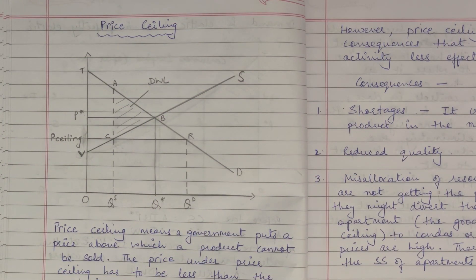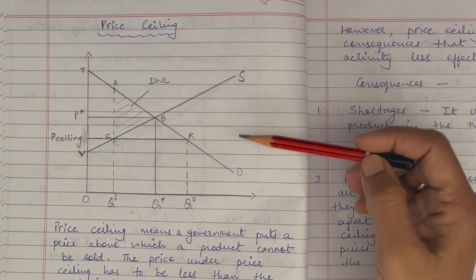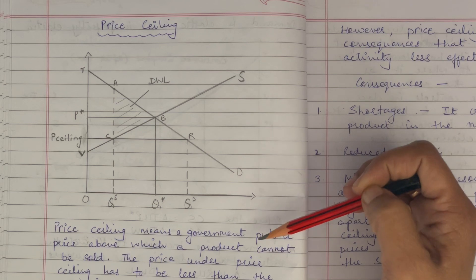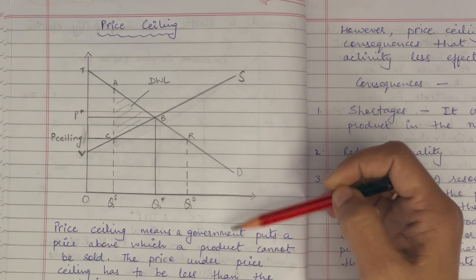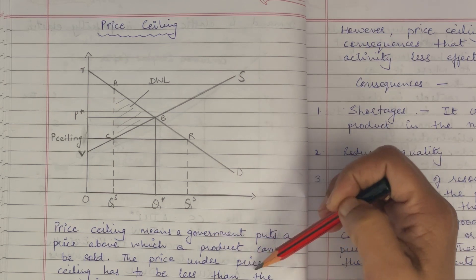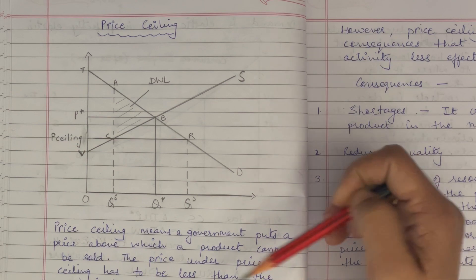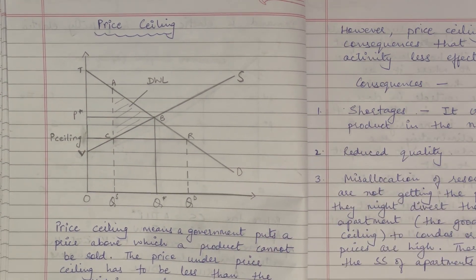Hi, I'm Deepti Sharma and today I'll be talking about price ceiling. So what is price ceiling? Price ceiling means a government puts a price above which a product cannot be sold. The price under price ceiling has to be less than the equilibrium price for that product in the market.